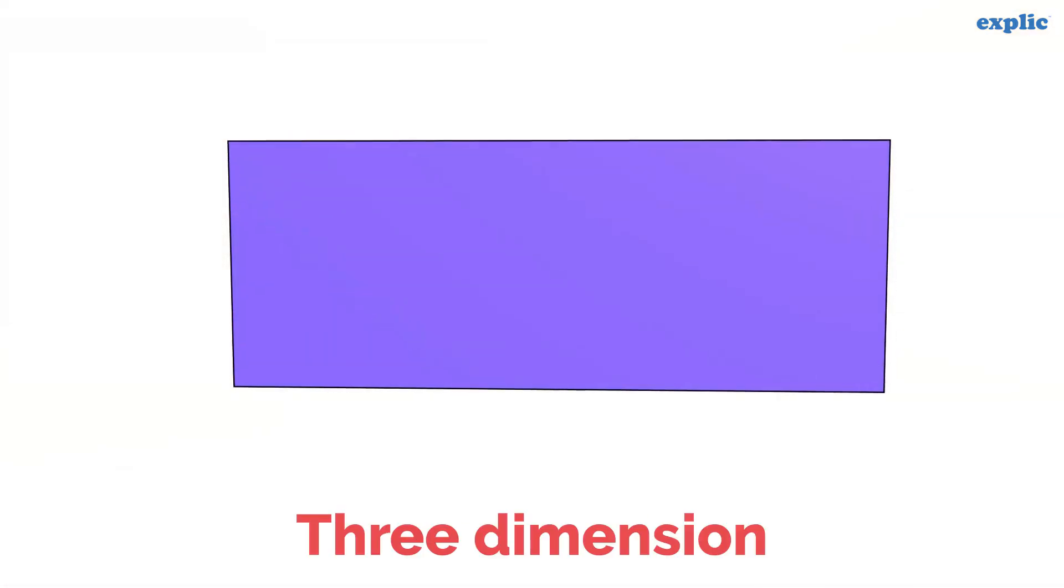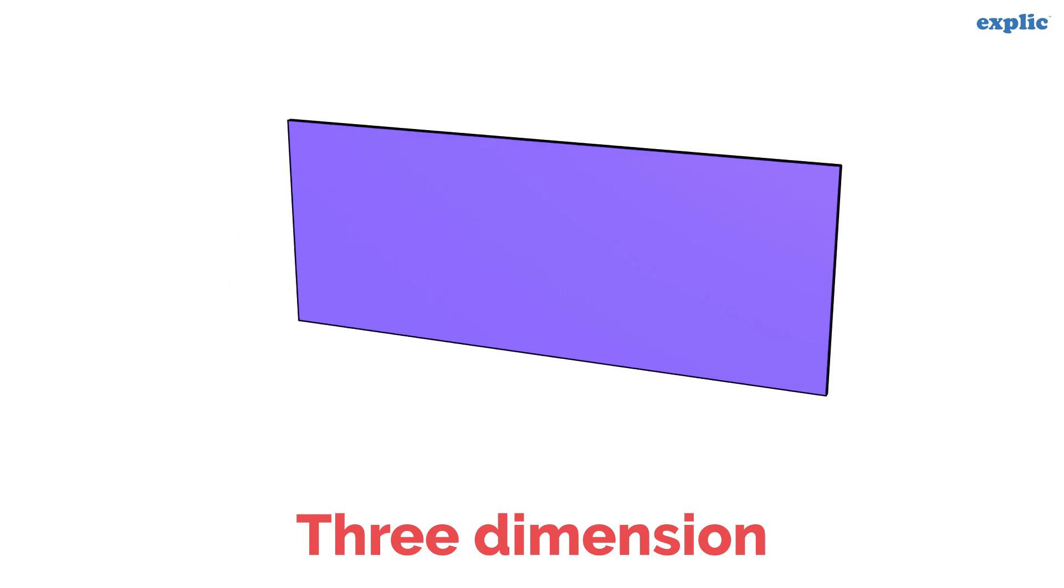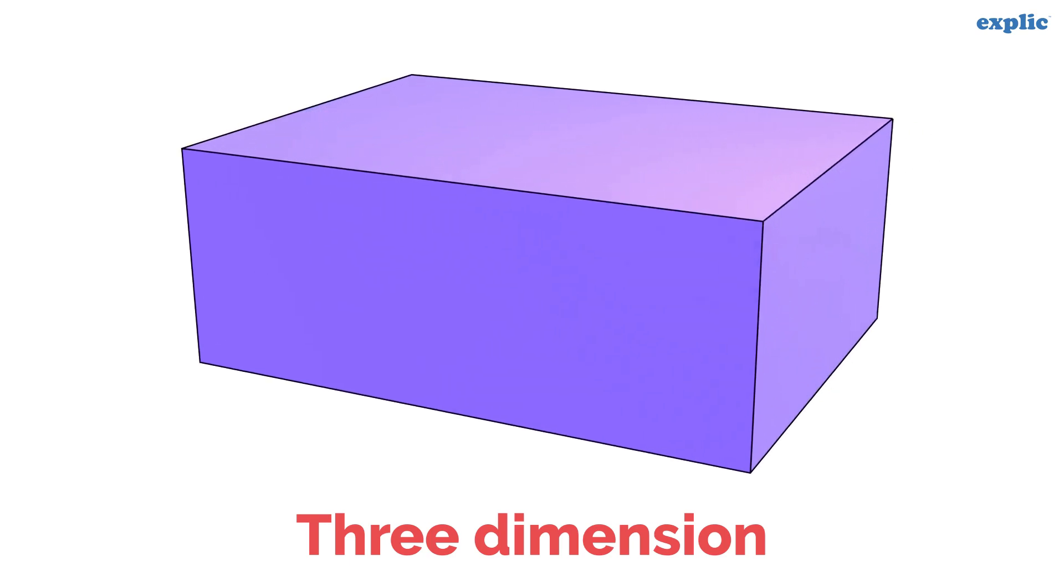If we increase the width of a two-dimensional rectangle by stacking it together, we can achieve three-dimensional cuboid.